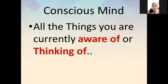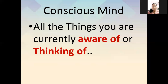The mind is divided into conscious, subconscious, and unconscious mind. First is the conscious mind: all things you are currently aware of or thinking about — the things which involve your present, which you are thinking currently and are aware that you are doing.